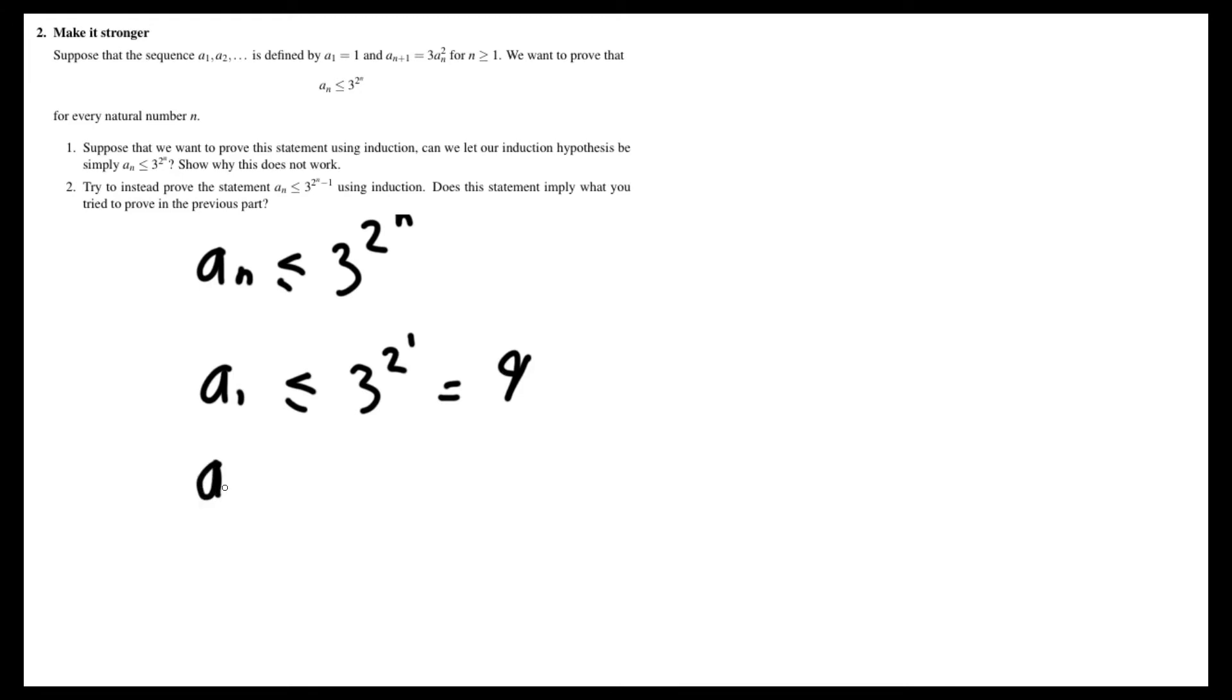But if we try the inductive hypothesis, given that aₖ is less than or equal to 3 to the 2 to the k, then aₖ₊₁, which is equal to 3 times aₖ squared, has to be less than or equal to 3 times (3 to the 2 to the k) squared, which is equal to 3 times 3 to the 2 to the k plus 1.